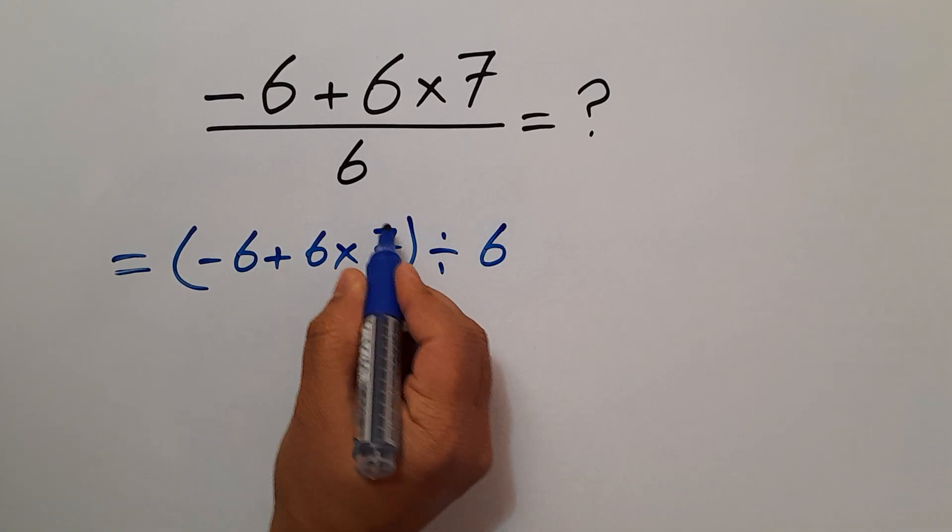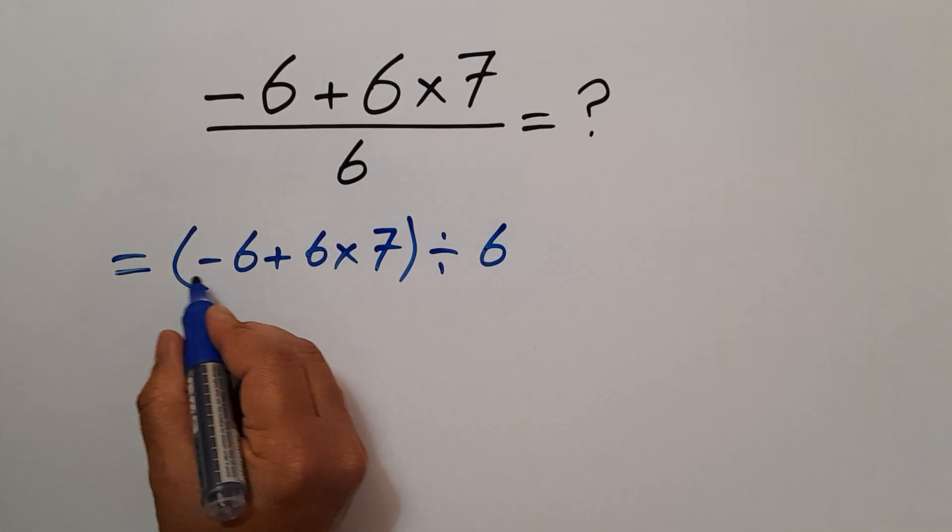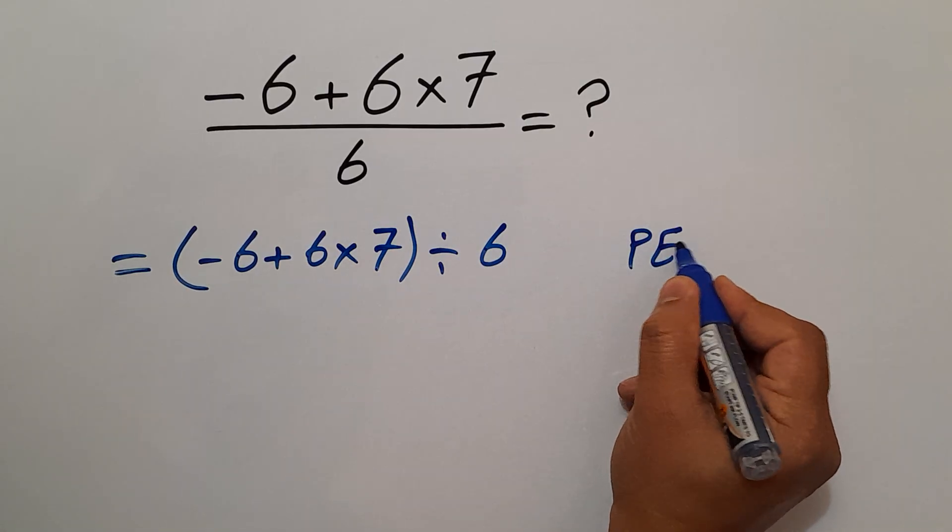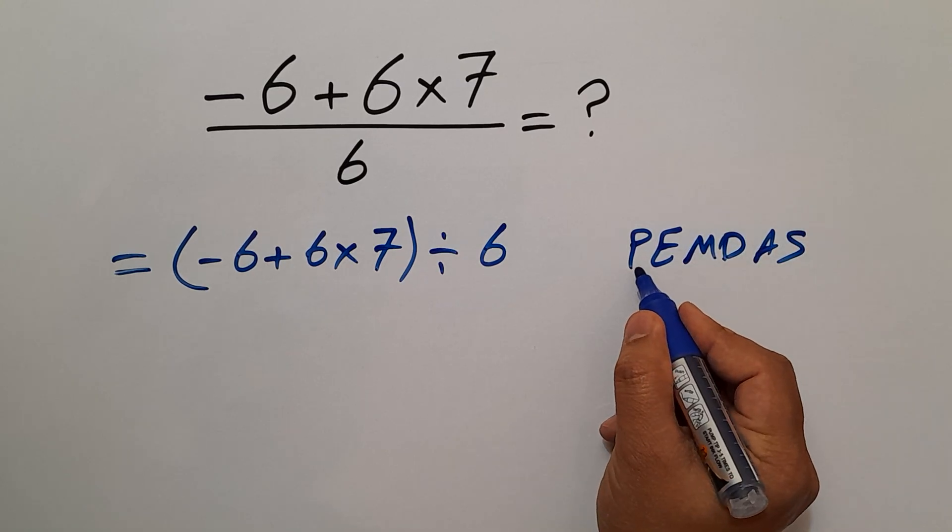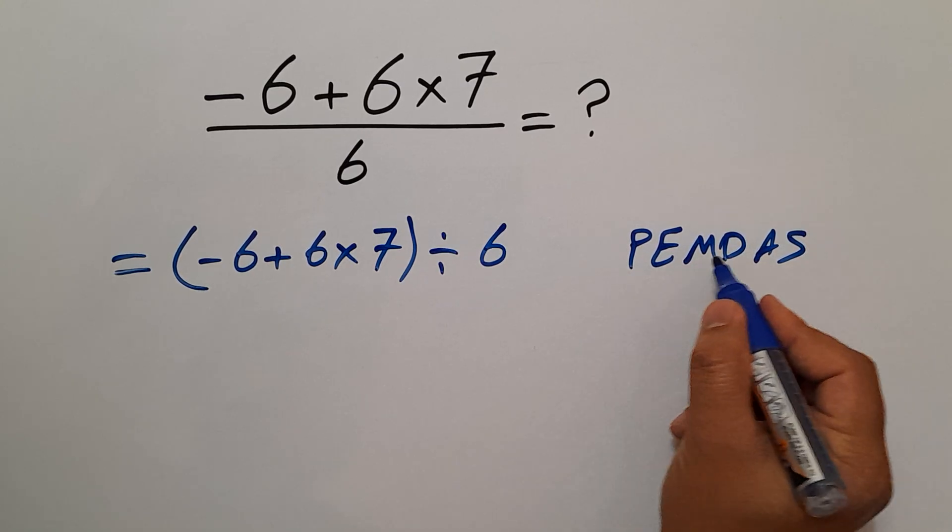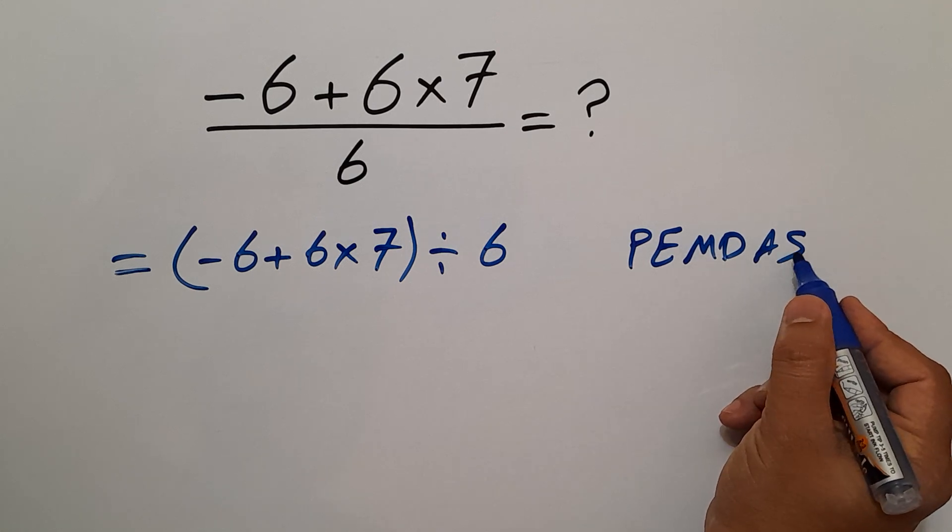According to the order of operations, which is PEMDAS: P stands for Parentheses, E stands for Exponents, M and D stands for Multiplication and Division, and A and S stands for Addition and Subtraction. We first do parentheses, then exponents, then multiplication and division, and finally addition and subtraction.